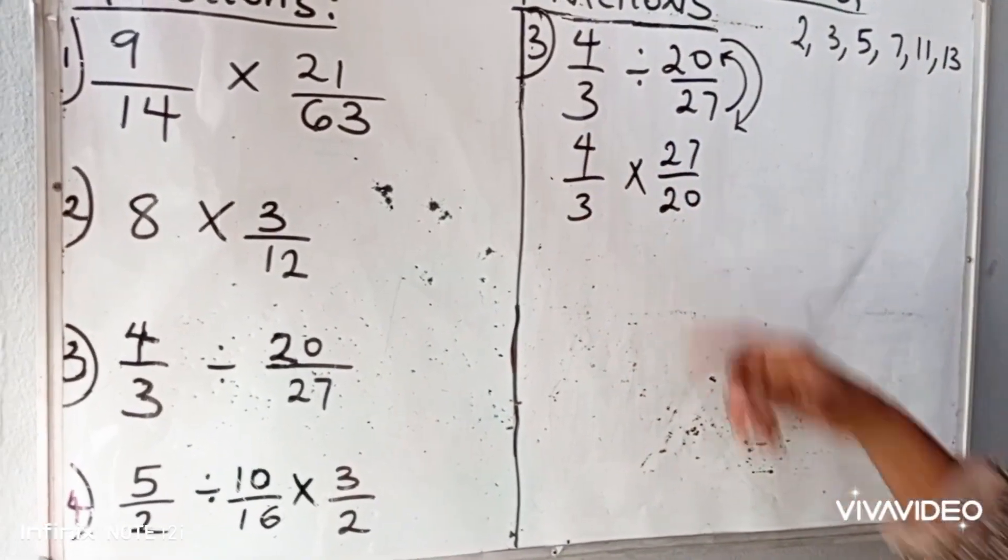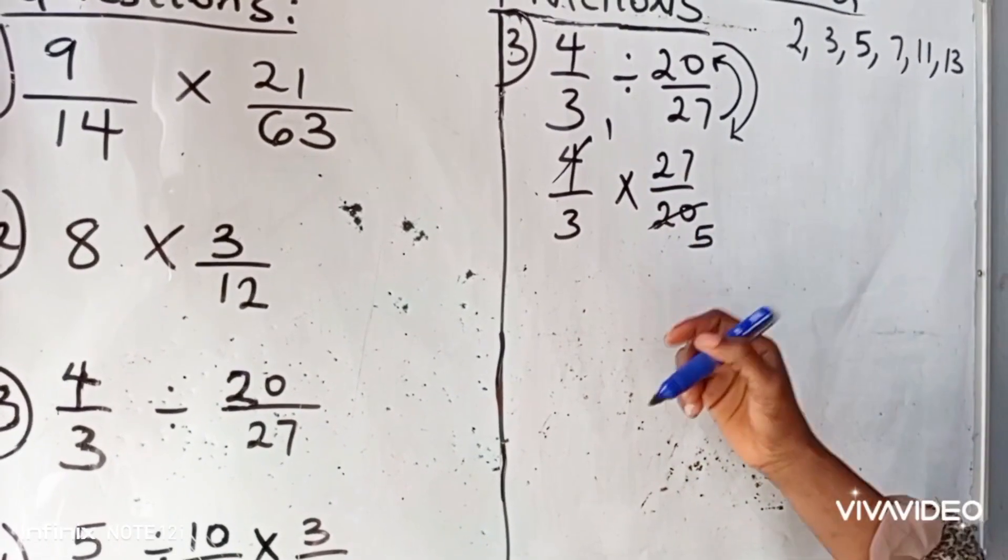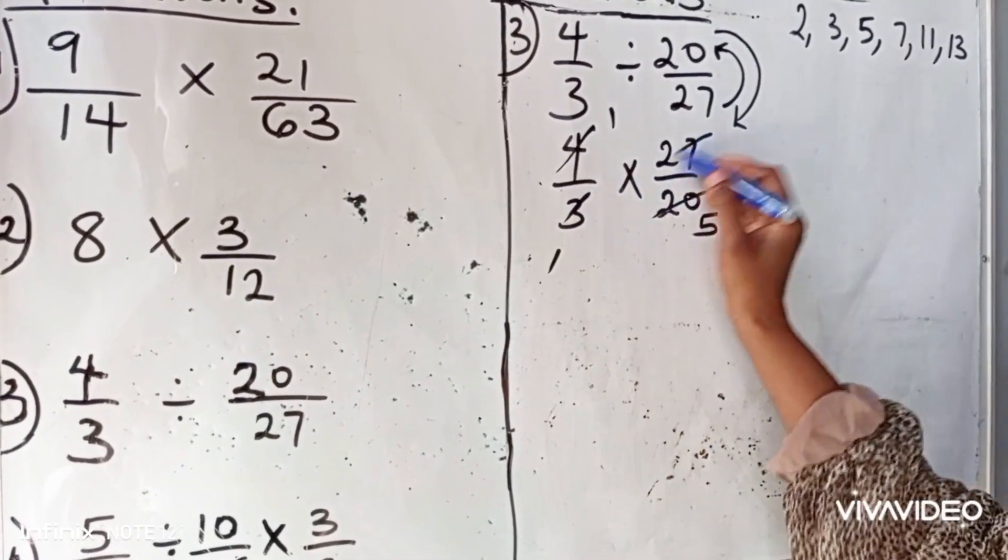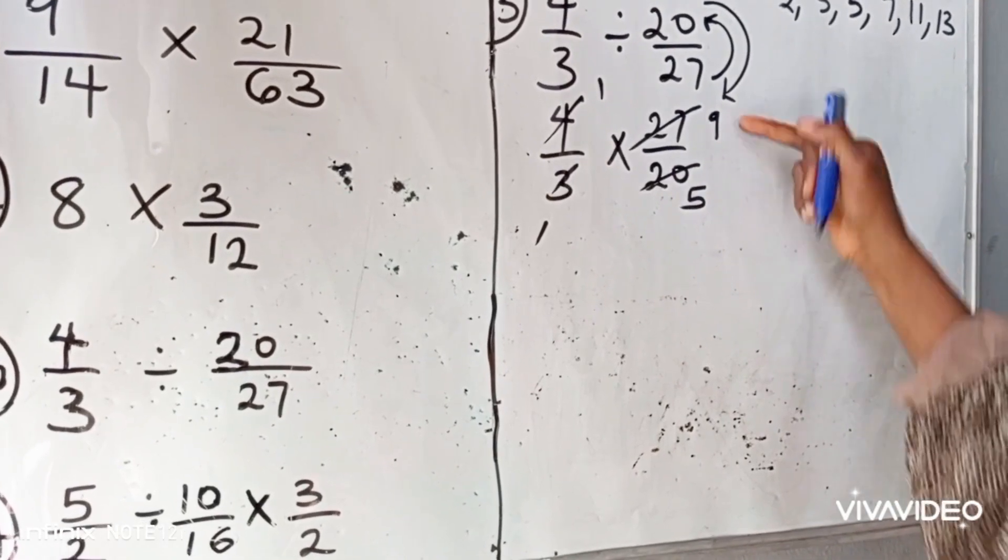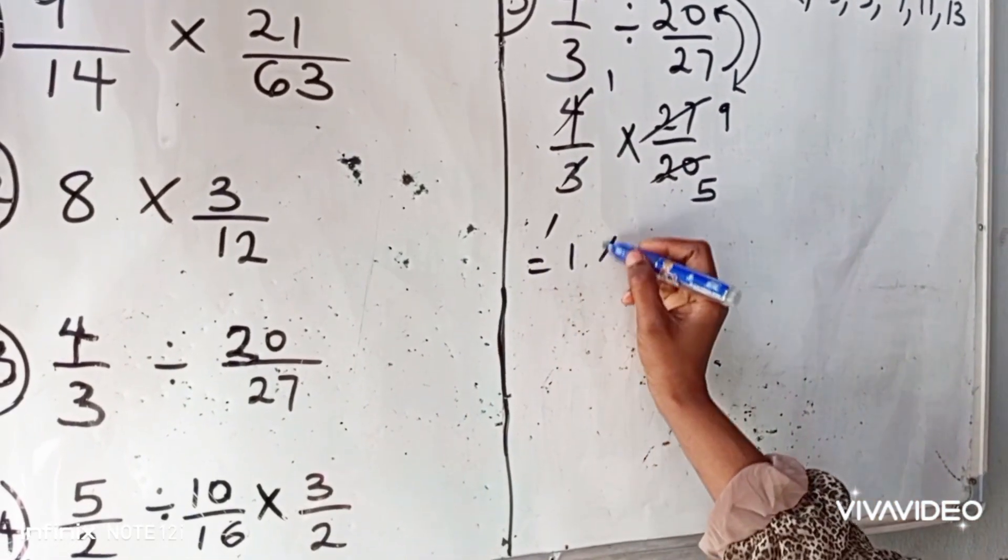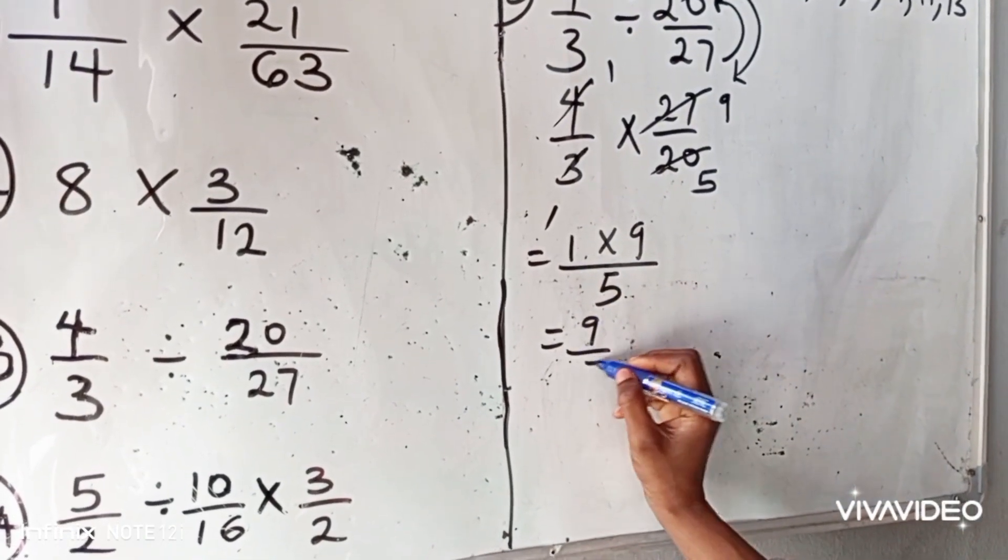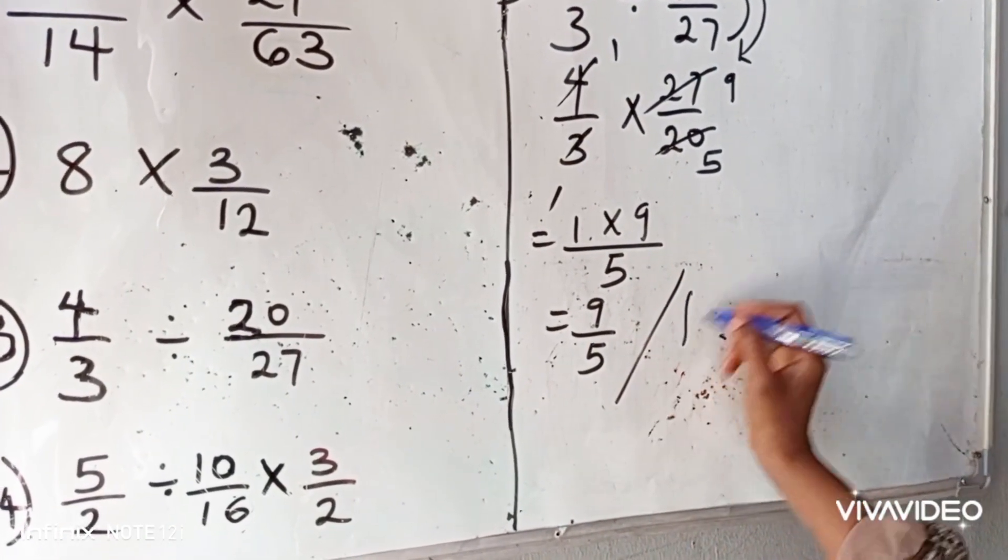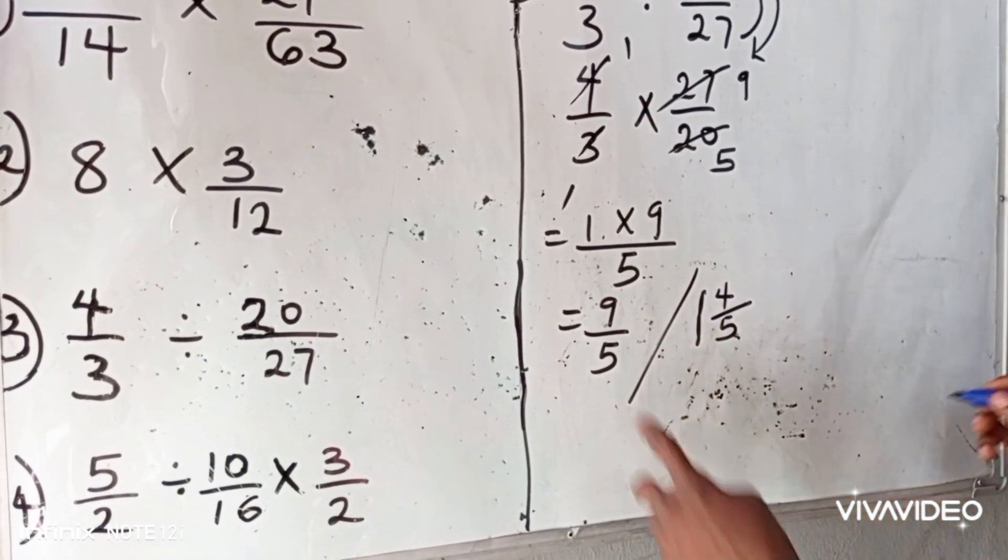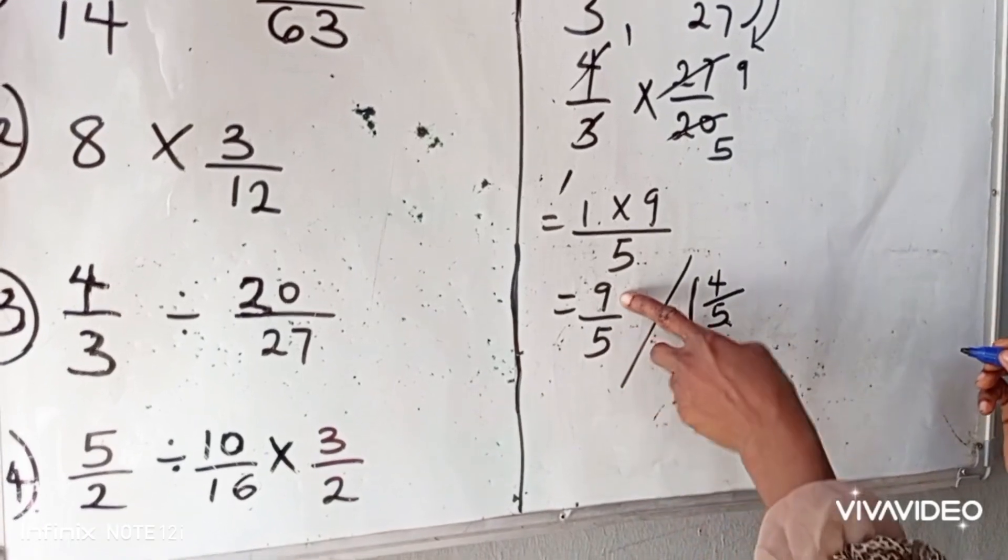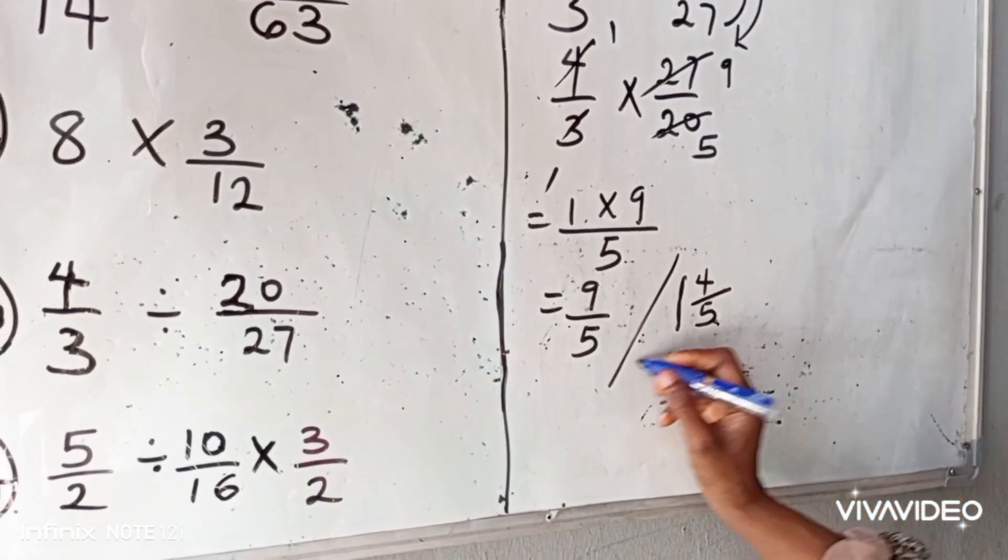Can 4 go into 20? Yes. 4 here, 1. 4 in 20, 5. Can 3 go into 27? Yes. 3 here, 1. 3 in 27, 9. And 9, can 5 divide 9? No. So we have 1 multiplied by 9 all over 5, which is equal to 9 all over 5. Change to mixed fraction. We have 1 whole number, 4 all over 5. It means we can get only 1 five from 9 and we have 4 as the remainder all over 5.